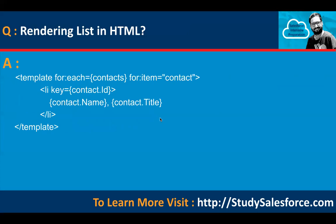How to render a list in HTML: use for:each on a list property. The list will have more than one item, and one by one each contact will be available in the iteration variable. Then we have a list item displaying the contact name and contact title. For each list item, you need to define a key — here the ID is defined as the key.